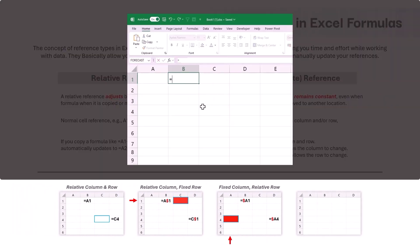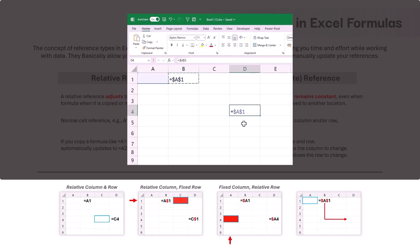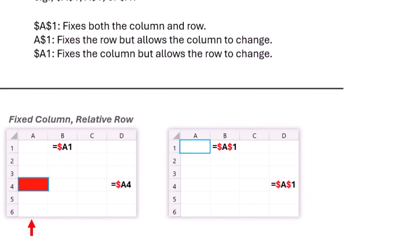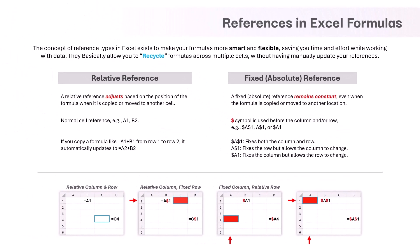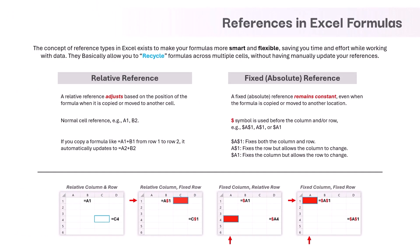In the last scenario, let us enter a formula as $A$1 in cell B2 — it will point at cell A1, but we have added a dollar symbol to both column and row references. If we copy this formula to cell D4, the formula remains as $A$1. Since we added a dollar symbol to the column reference, the column stays at column A. Since we also added a dollar symbol to the row reference, the row stays at row 1. Since both column and row references are fixed, we call this fixed column and fixed row reference.